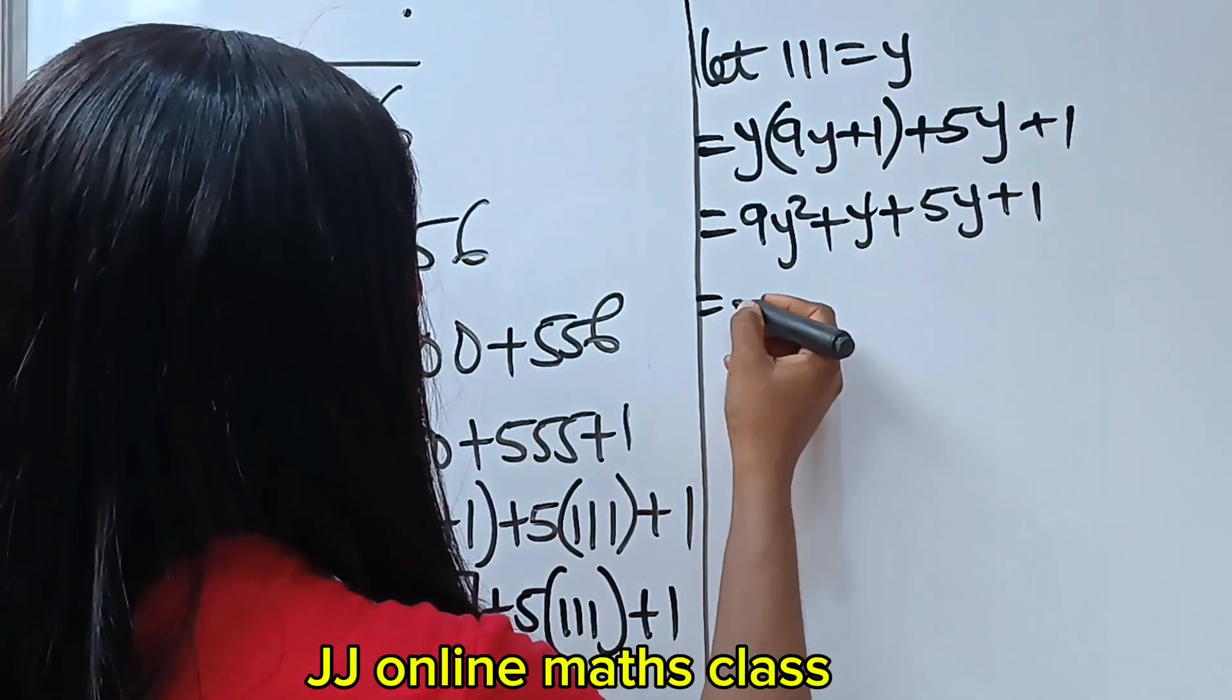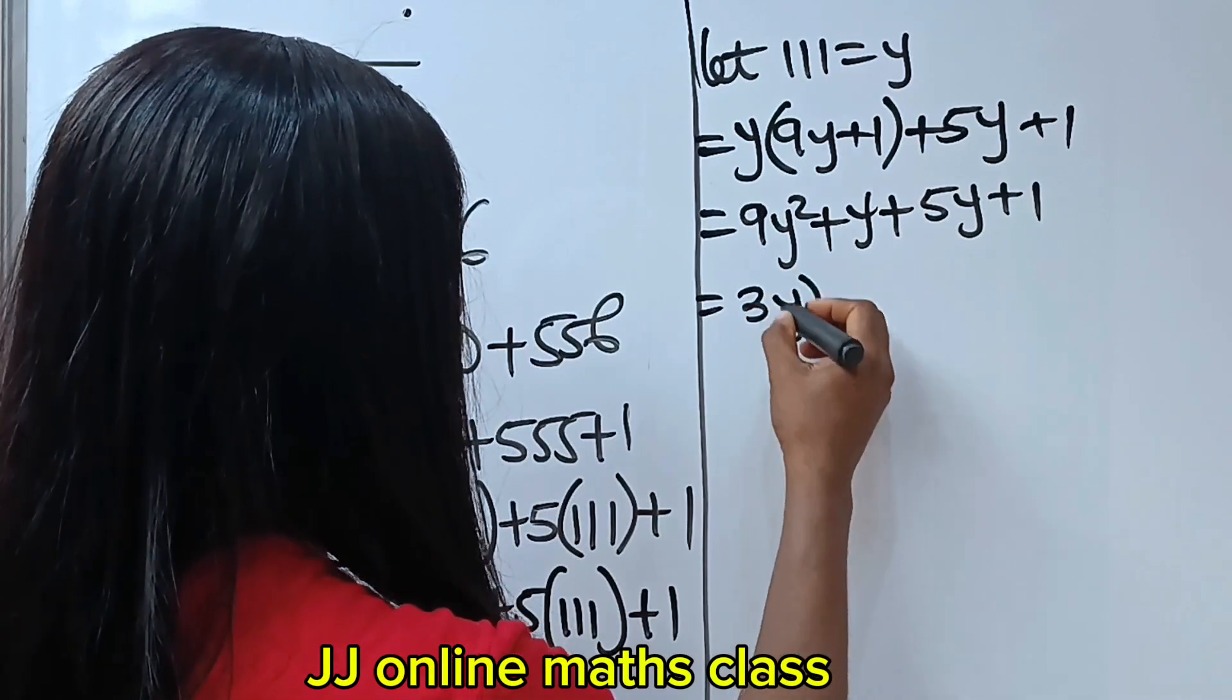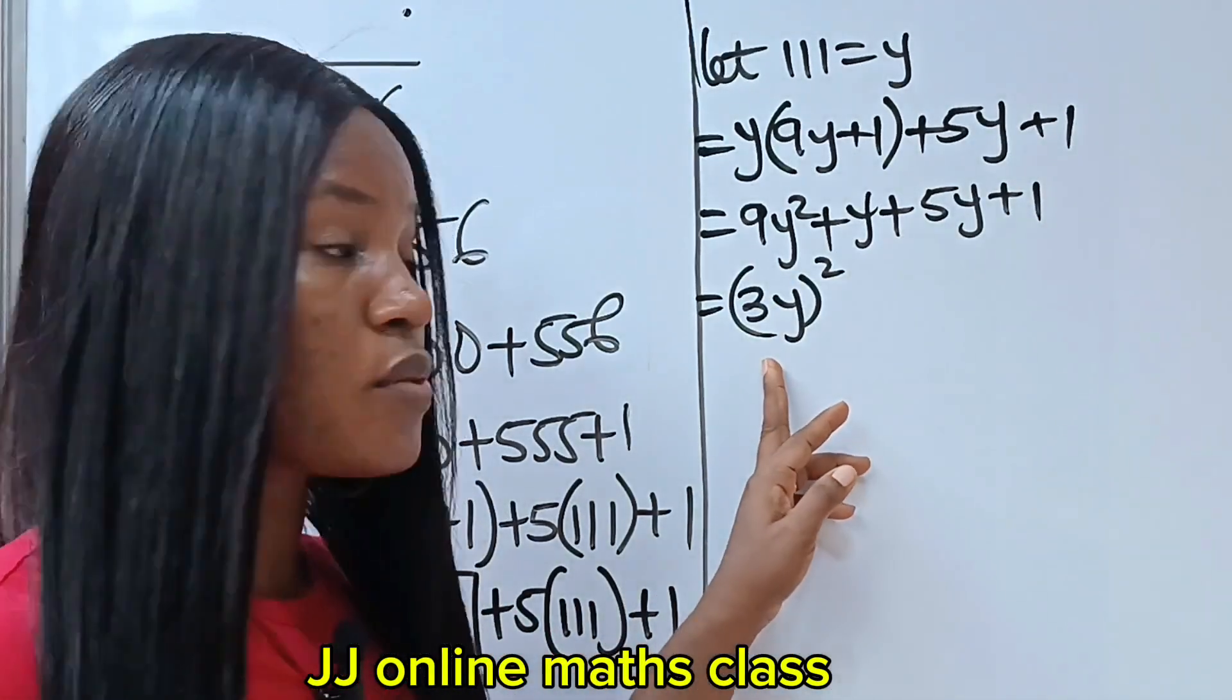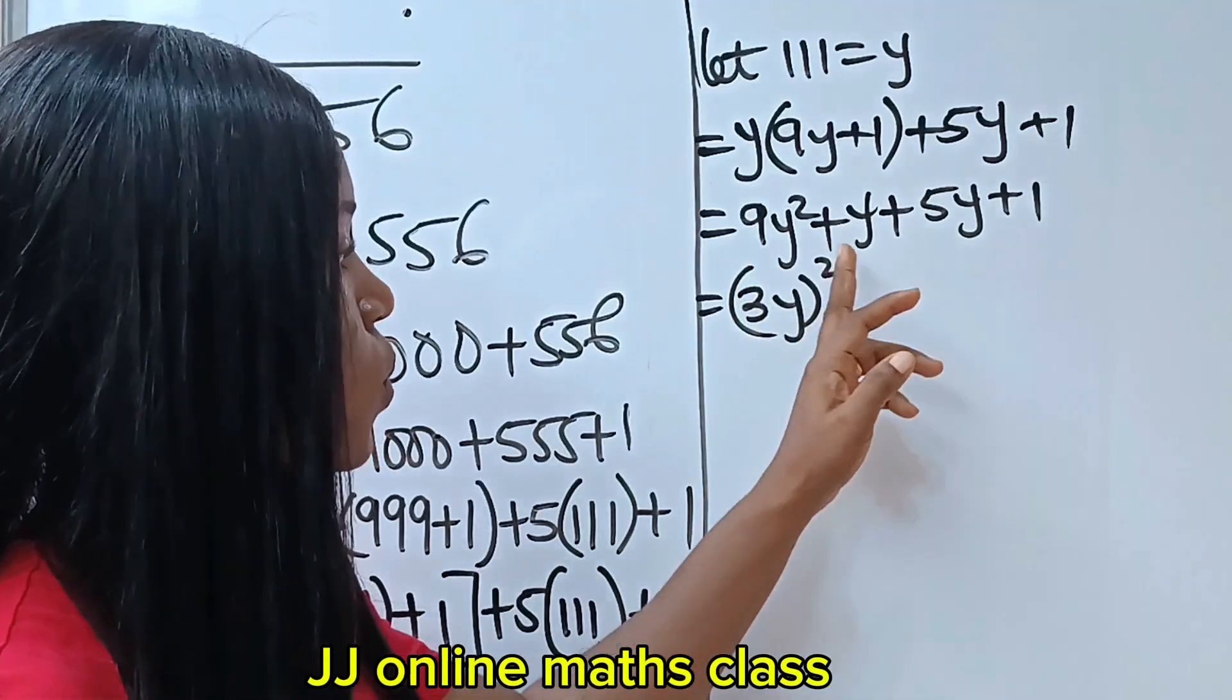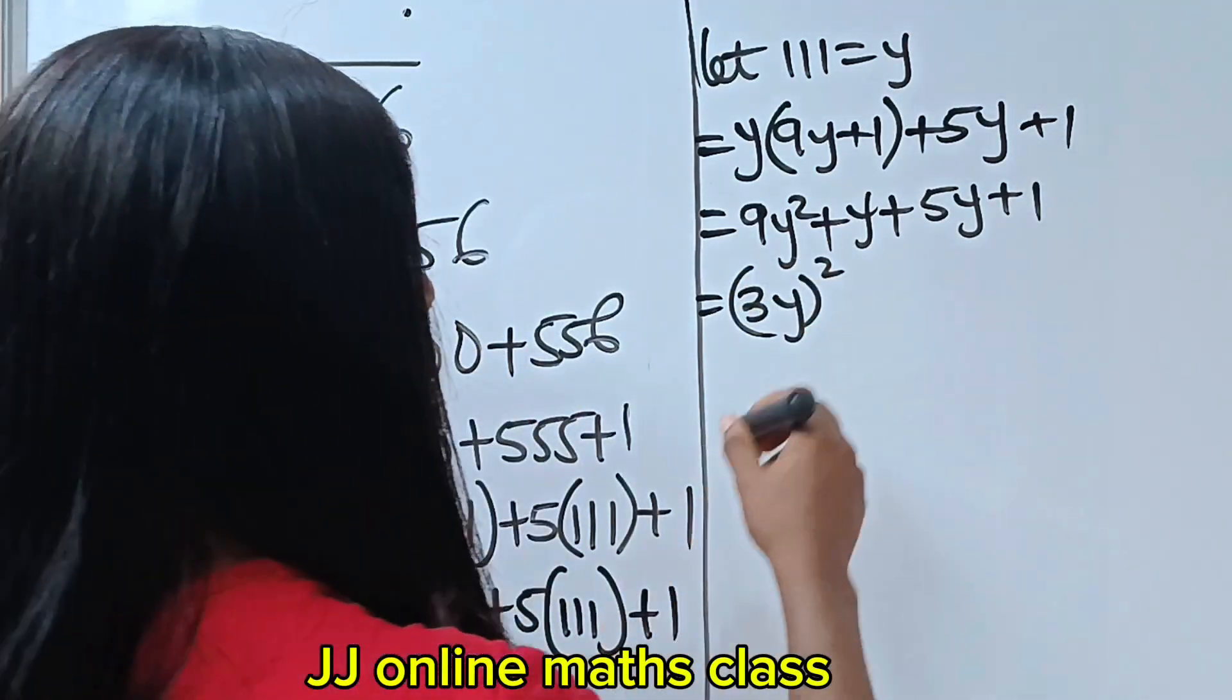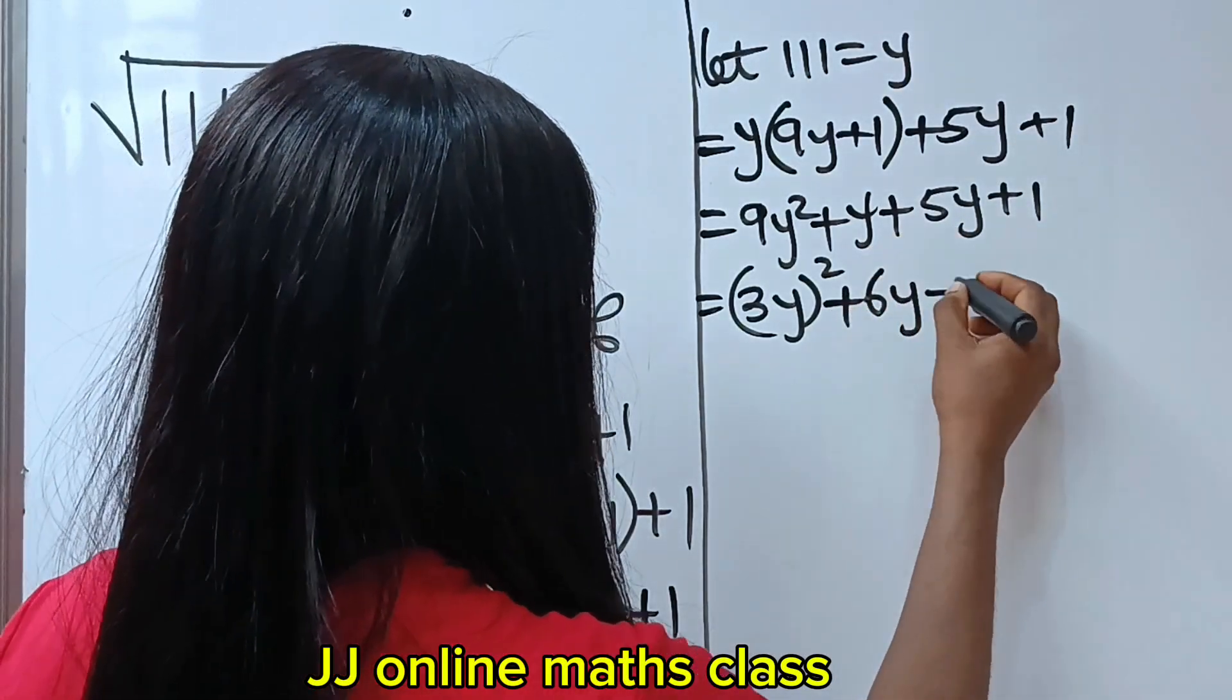So, this can be written as what? We can write this as 3y squared, because if we open this bracket, we are going to get this back. 3 squared is 9, y squared is y squared. Now plus y plus 5y is 6y plus 1.